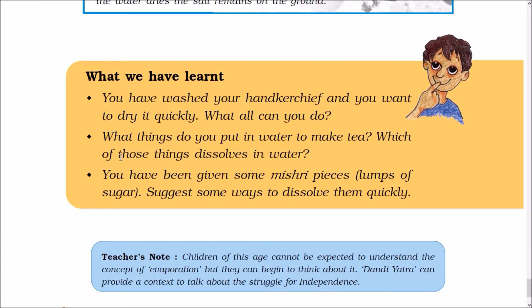What have we learned from this chapter? You have washed your handkerchief and want to dry it quickly — what can you do? I will squeeze the water out of the handkerchief, then spread it on a clothesline in the sun. I can also press it with a warm iron so that my handkerchief dries rapidly.